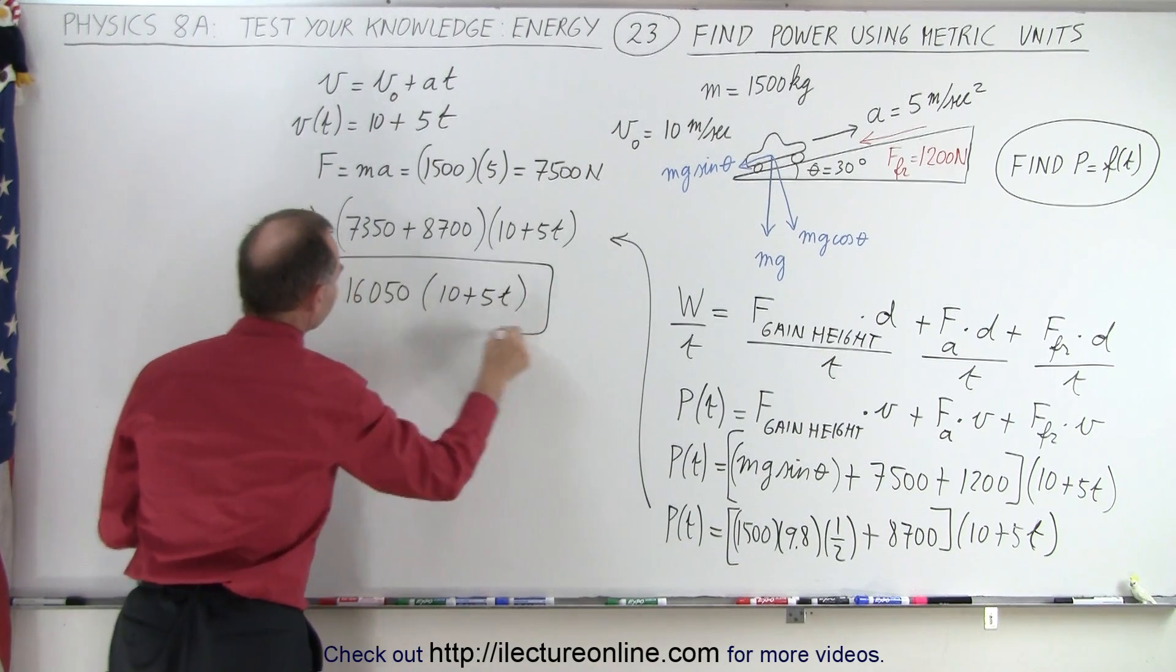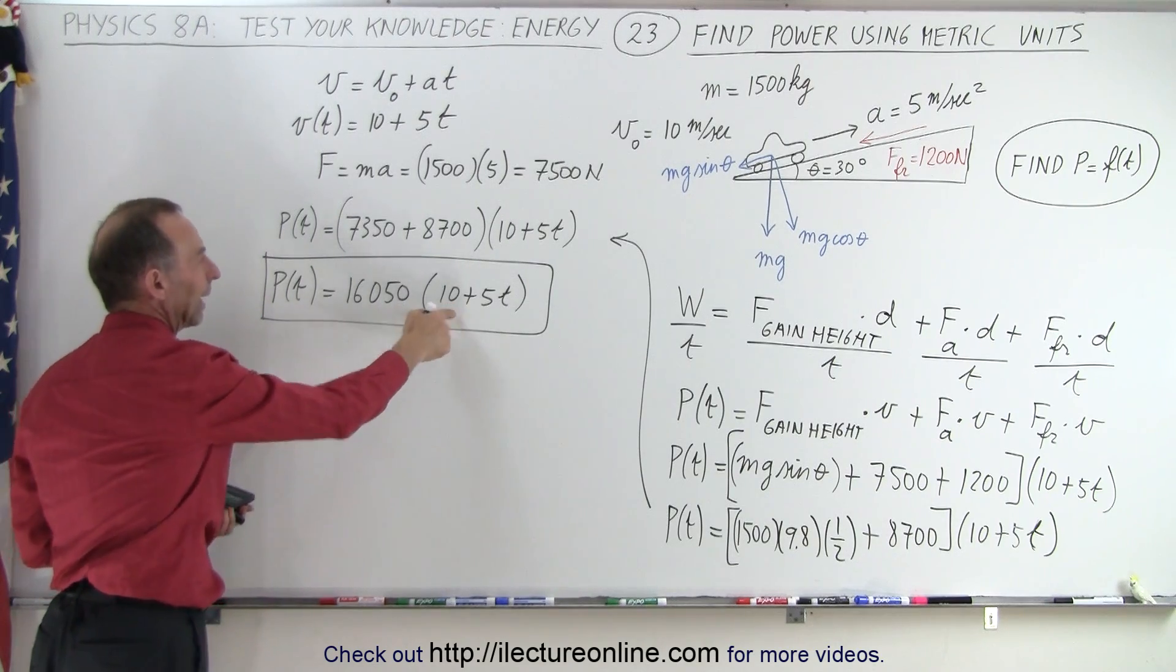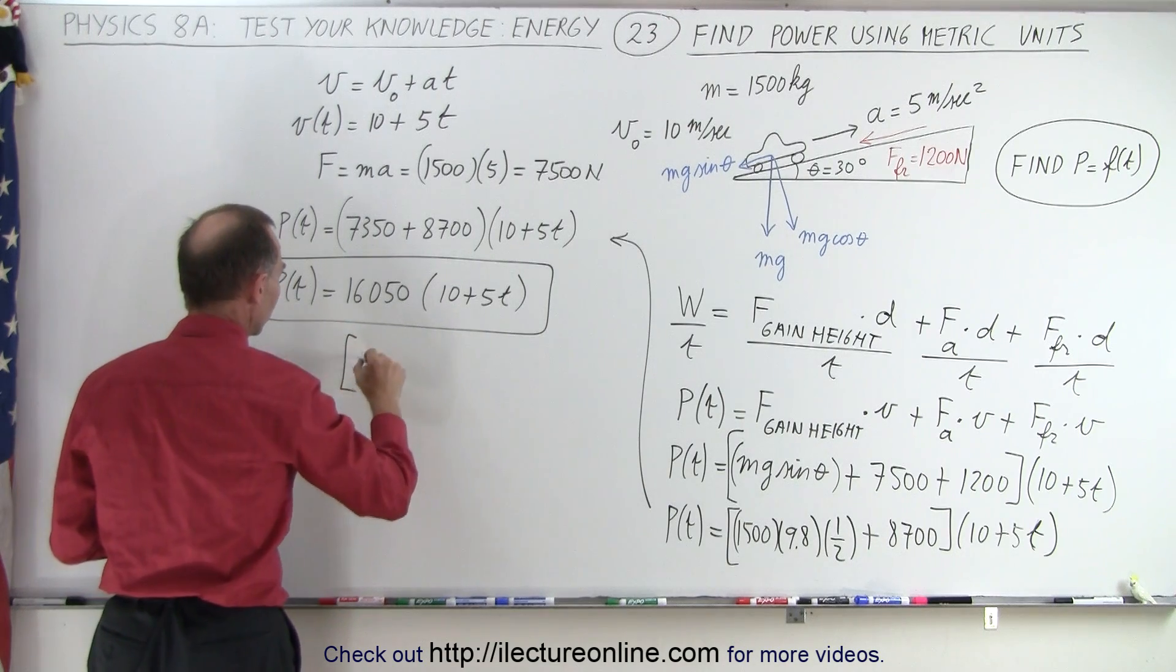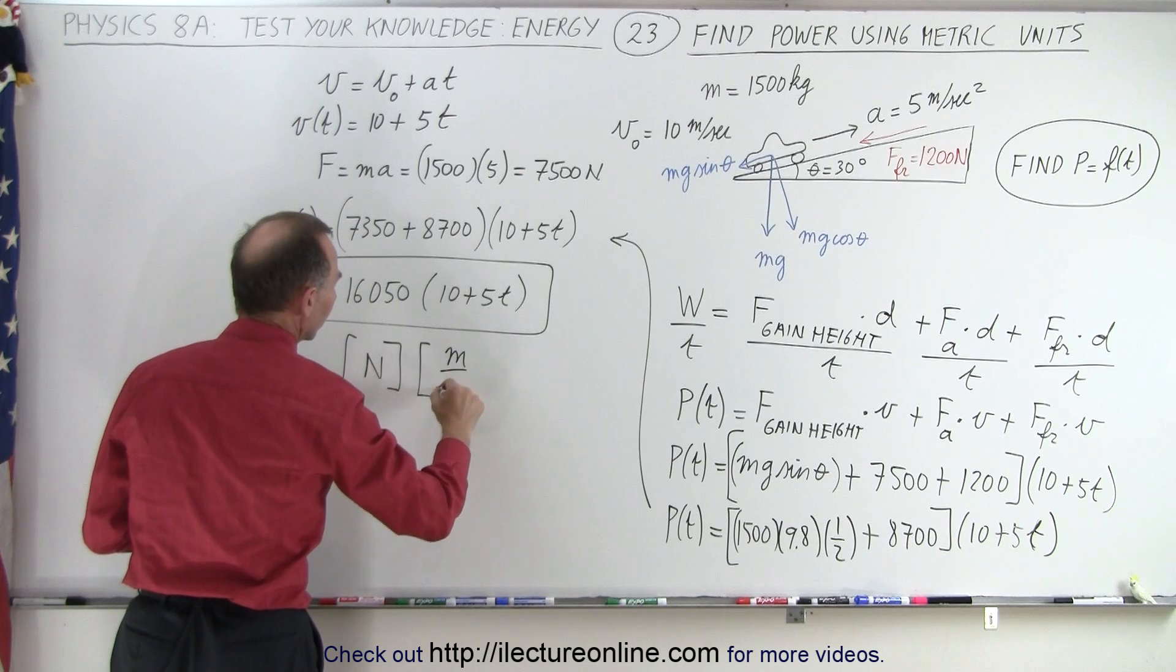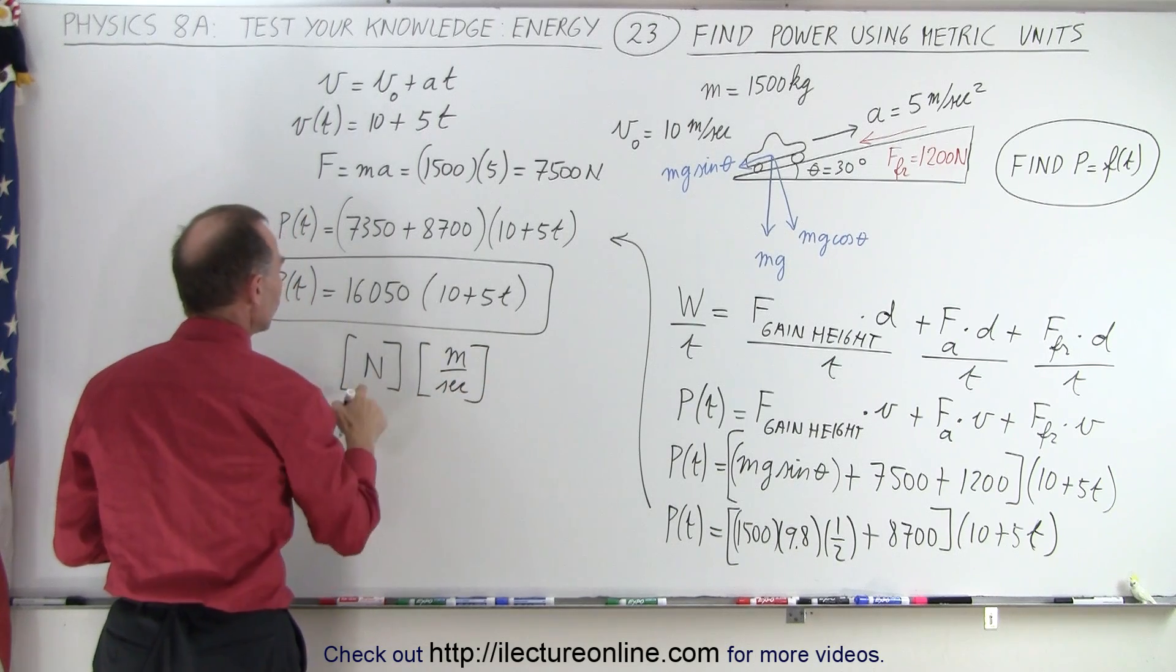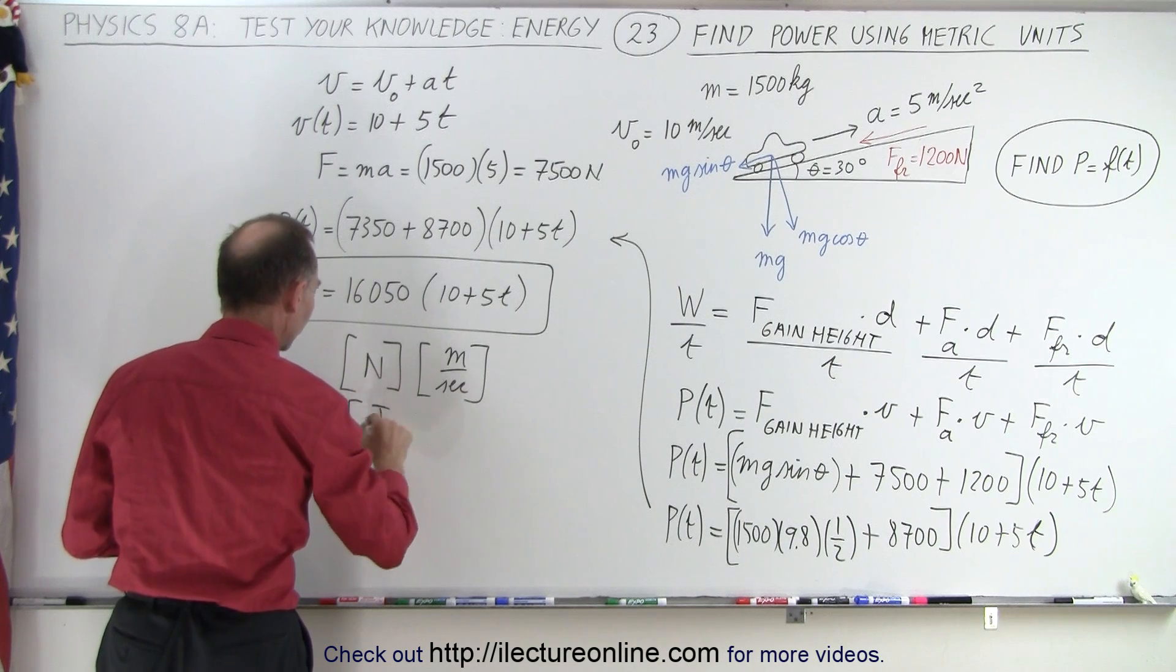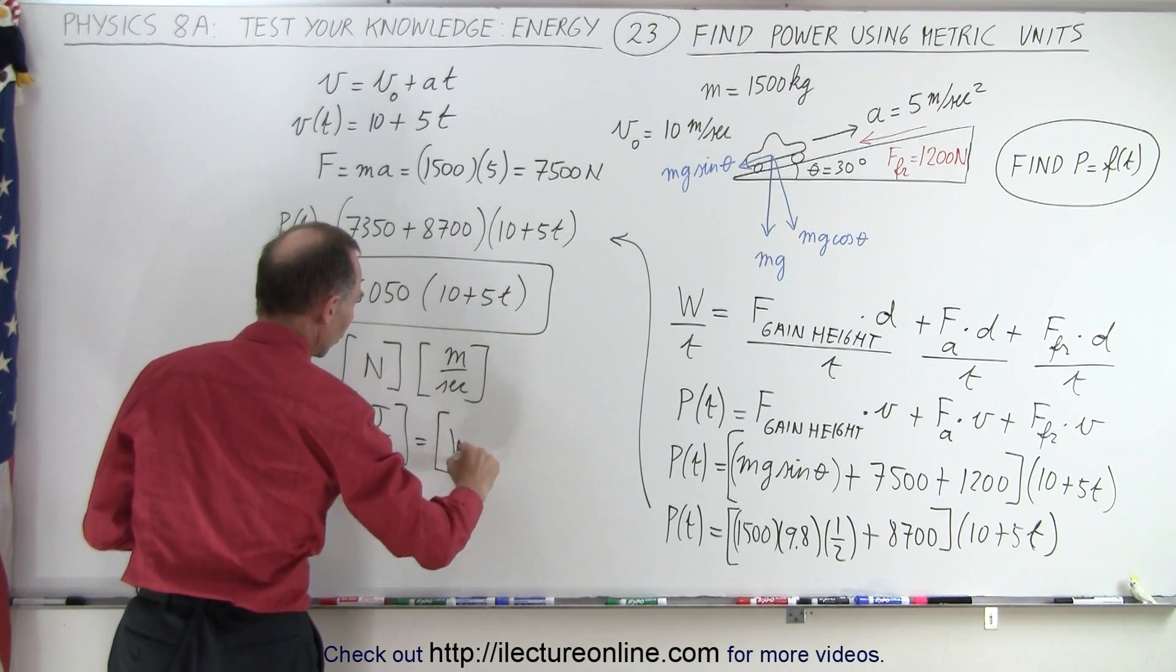What about the units? This is force and that is velocity. Force is newtons and velocity is meters per second. Newtons times meters is joules, so this is joules per second, and of course joules per second equals watts.